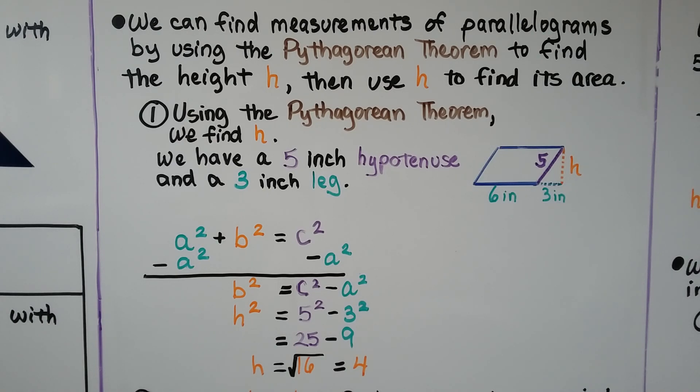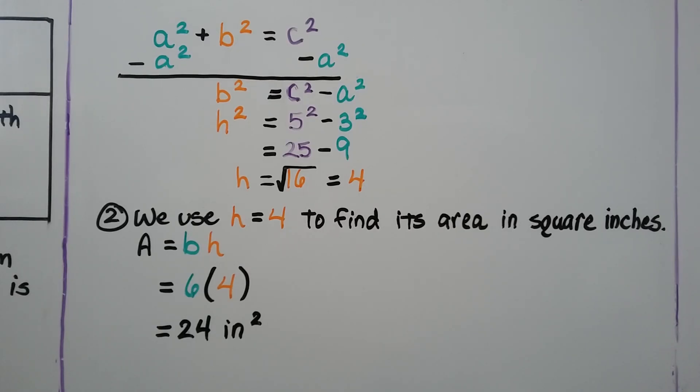Now that we have that, we can use h equals 4 to find its area in square inches. The area is equal to the base times the height. We know the base was 6 inches, so it's going to equal 6 times that 4, which is 24 inches squared.